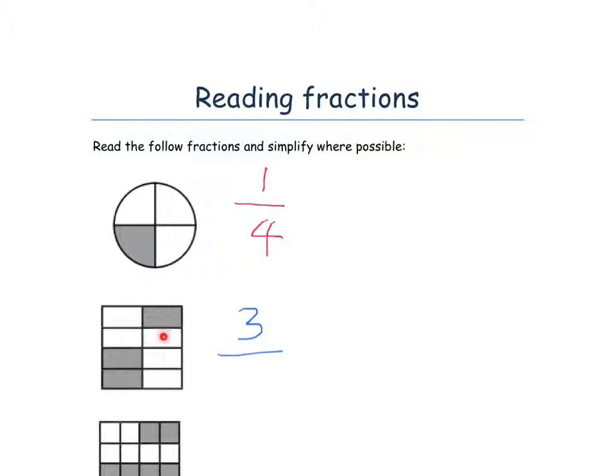...well, we've got one, two, three, four, five, six, seven, eight possible sections. So the fraction that's colored in is three eighths, because three out of a possible eight sections are colored in.